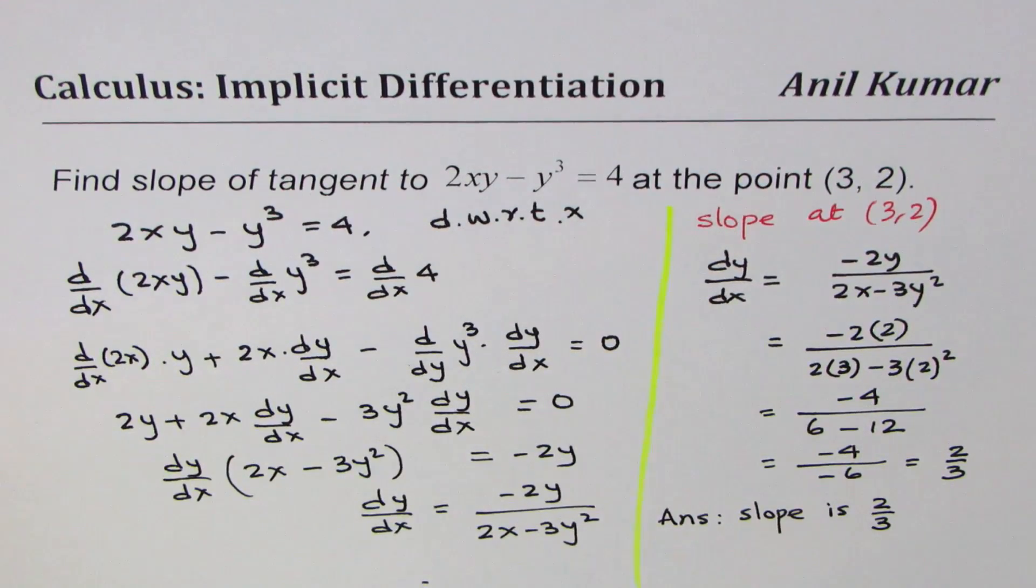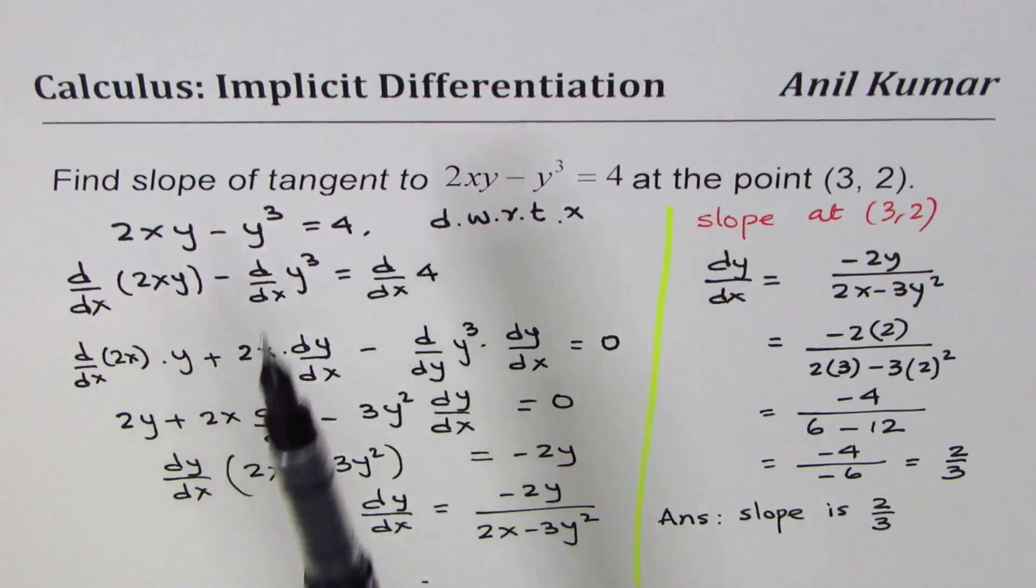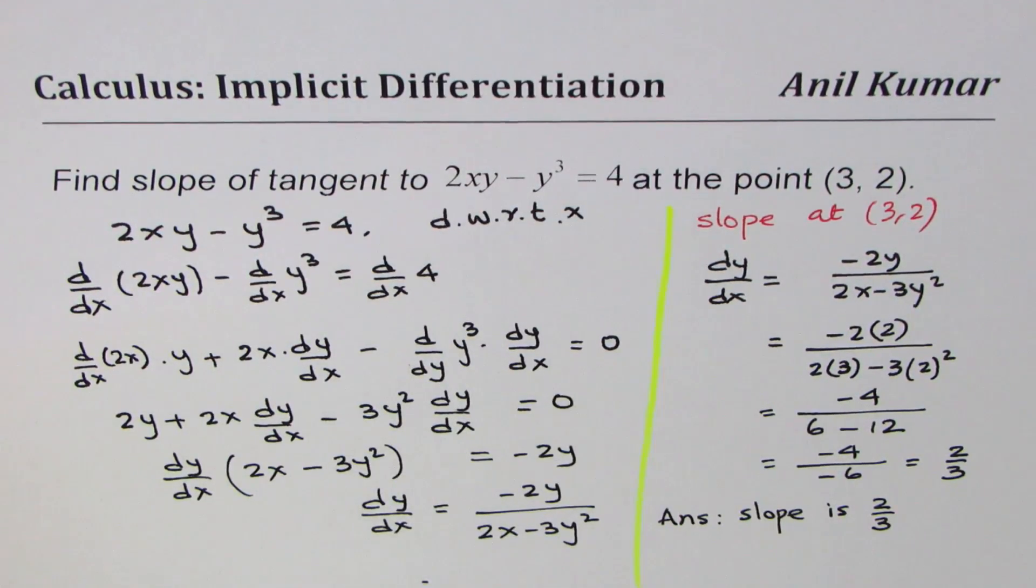I hope with this example you learned how to differentiate using implicit differentiation. The slope is dy/dx at a given point. You can always substitute x and y values and get the slope at the point. I am Anil Kumar and I hope that helps. You can share and subscribe to my videos. Feel free to post questions. Thank you and all the best.